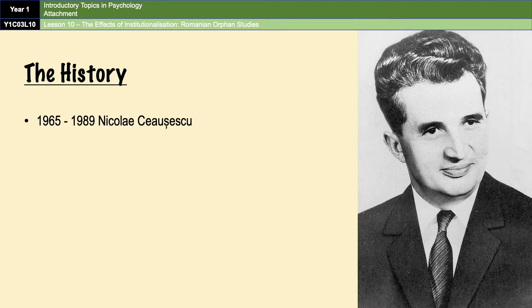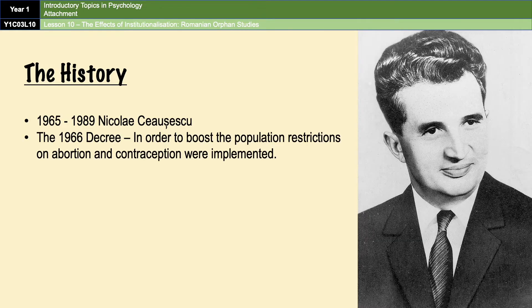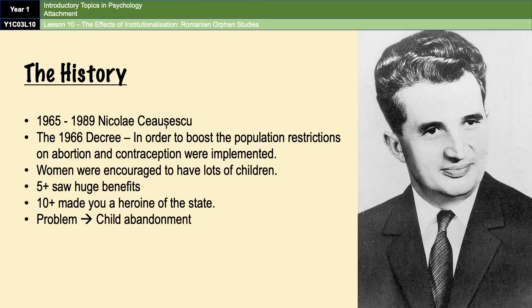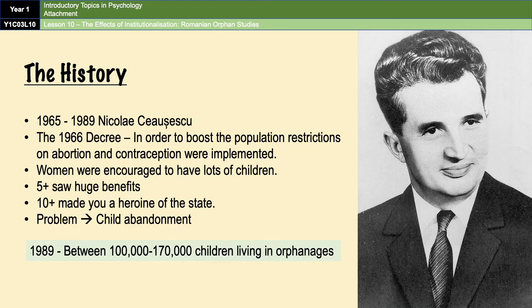Understanding why it was possible to conduct Romanian orphan studies in the first place is quite important. From 1965 until 1989, Romania was ruled by a communist dictator called Nicolae Ceausescu. In an attempt to boost the Romanian population, he implemented restrictions on abortion and contraception and introduced benefits for families having children. However, people couldn't afford to have many kids, which meant many families were producing babies without the means to care for them, resulting in high levels of child abandonment. Over the roughly 20 years Ceausescu was in power, it's estimated that around half a million children were raised in orphanages.